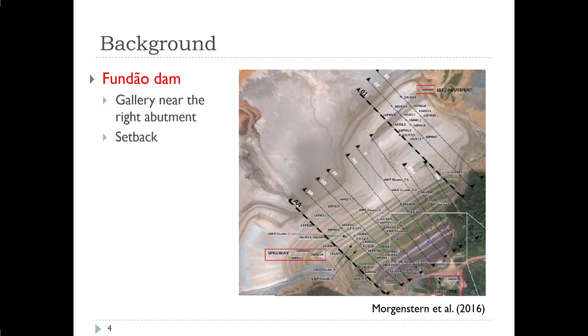And if we look at a plan view of the dam pre-failure, here we see a setback, number one, I would just bring your attention to that goes through the center of the dam that was installed largely to increase the safety of the dam in those particular cross-sections. And the cross-sections shown are the cross-sections that were analyzed by the expert panel post-failure.